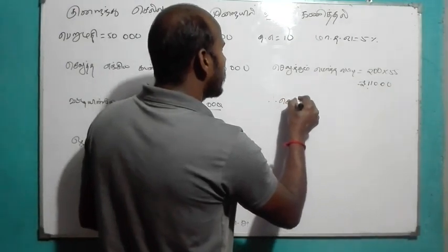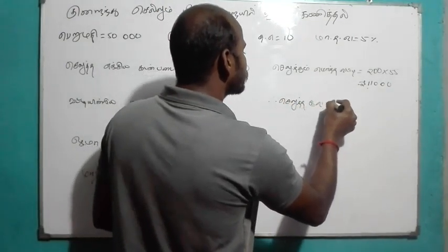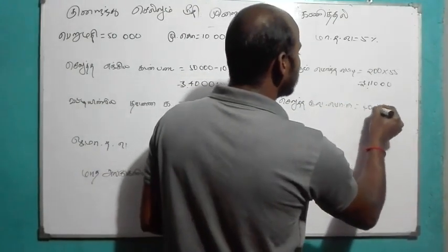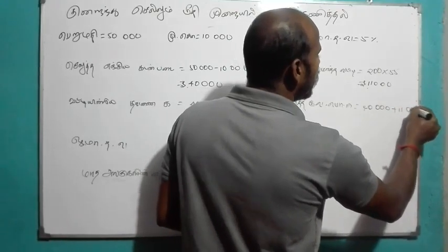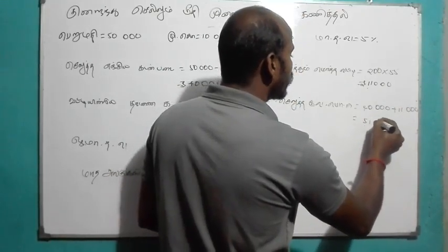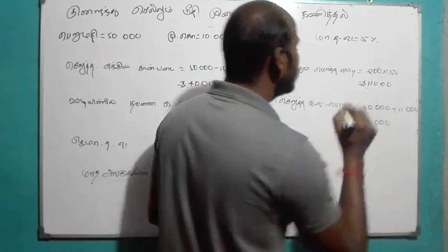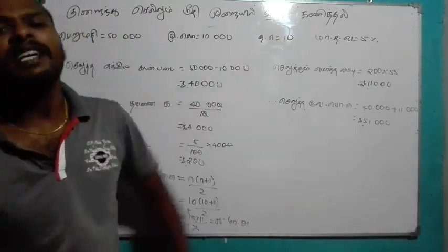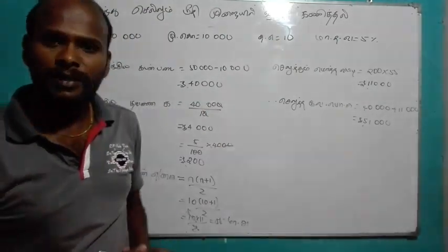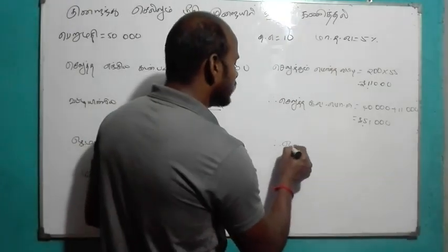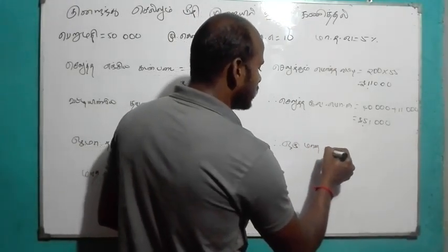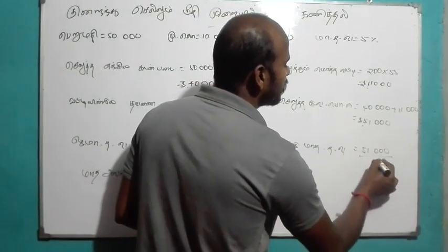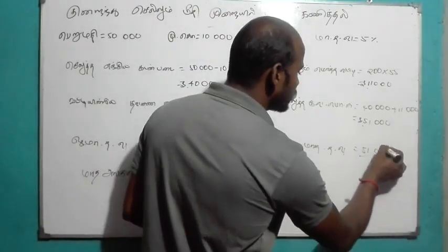We'll pick the A one, first plus. If you have one second step, take one step. Take one step and take a look at the next step. Take a look at the next step.